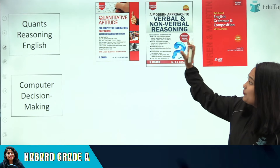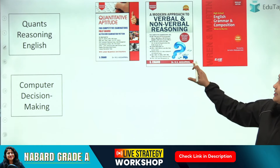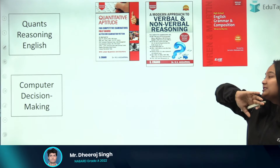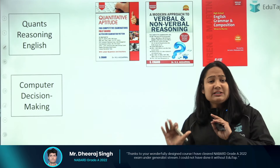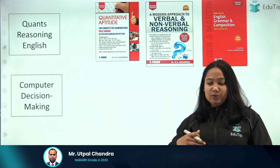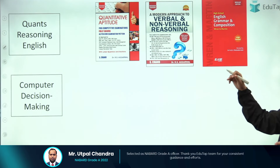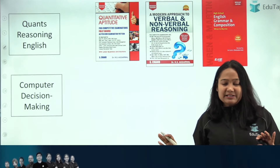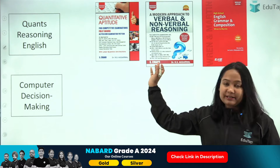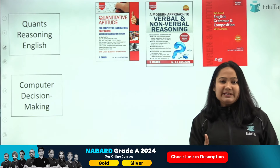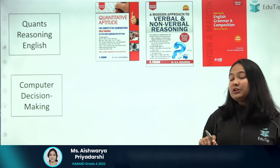For quants, reasoning, and English, we have three books. For quants you can refer to R.S. Aggarwal Quantitative Aptitude; similarly for reasoning, R.S. Aggarwal Verbal and Non-Verbal Reasoning. For English, if you're somebody who struggles with grammar — perhaps from a Hindi medium background — you can refer to this book to learn the basics. Otherwise, if you know the basics of English, you can jump straight into practice. Same goes for reasoning — if you know the basics, no need to refer to any book.